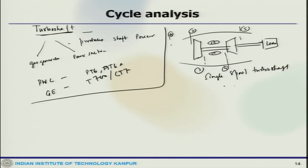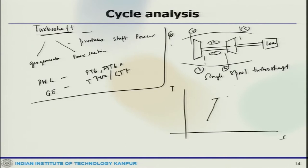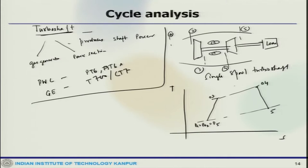For a single spool configuration, the T-S diagram starts from one point, goes up through compression, then through combustion, and comes back down through expansion. Here P_A equals P_02 equals P_5. This analysis is quite similar to the turbo prop analysis.